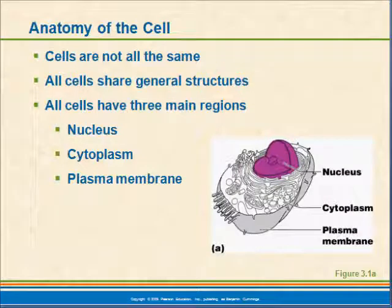First off, let's take a look at the anatomy of a cell itself, and understand that cells are not all the same. We have four major tissue types, each one of them with some unique characteristics, and within that we have something like 200 different subgroups — all with different capabilities based on the organelles they have, internal structures, and external structures. So they're not all the same.